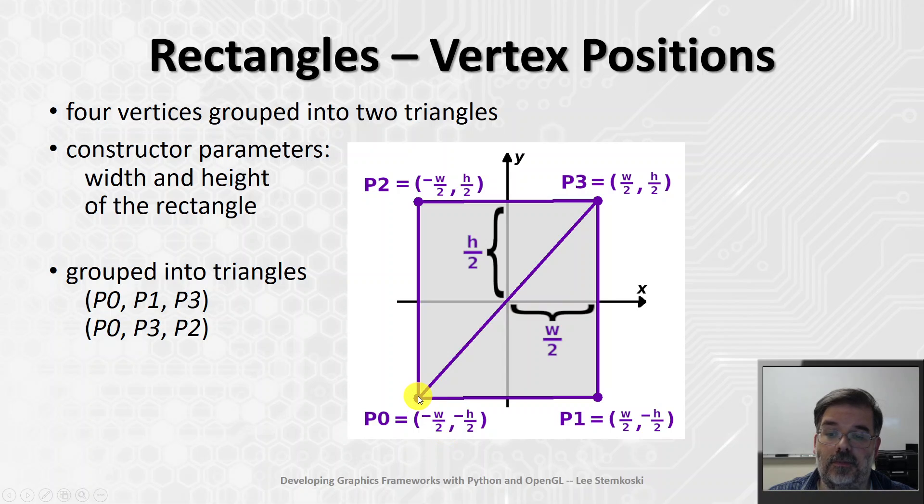We're going to group it into the triangle P0, P1 to P3, and the triangle from P0 to P3 to P2. Now, to make this a flexible class, to create rectangles of any dimensions, the constructor will take two parameters, the width and height of the rectangle. And assuming that the rectangle is centered at the origin, once we know the width and the height, we can calculate the coordinates of each of these vertices.